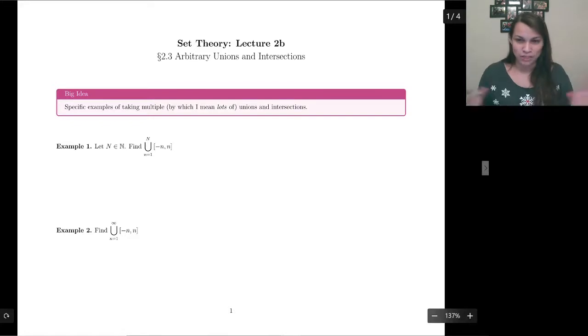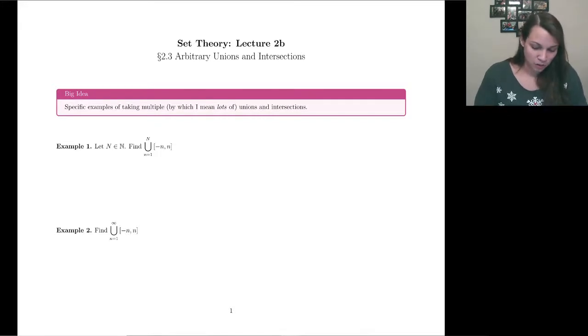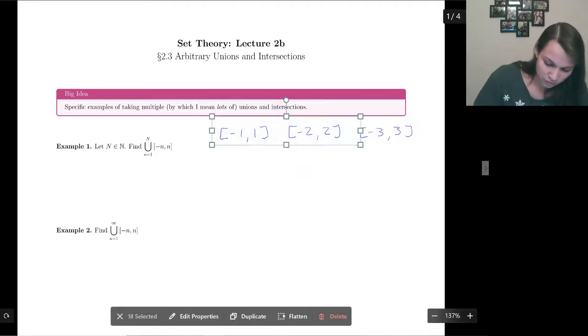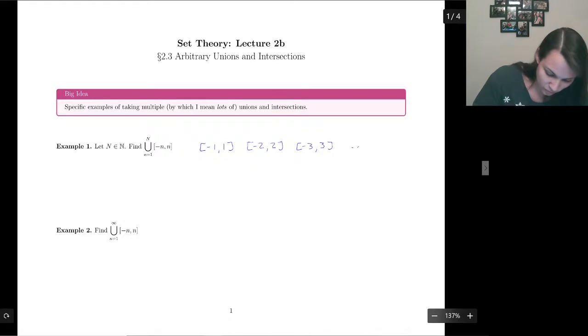Let's look at our very first example. I think that basically what we're going to do today is do a bunch of very specific examples and you're hopefully going to see the pattern for how to deal with these. The very first one that we have is we want to find the union of these intervals where we're doing the union for everything one up to some arbitrary capital N, where capital N is coming from the natural numbers.